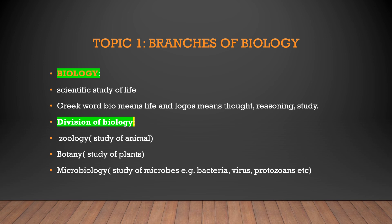Next, what are the divisions of biology? Biology includes three major categories: Zoology, which is the study of animals; Botany, which is the study of plants; and Microbiology, which is the study of microbes — organisms that cannot be seen with the naked eye and must be viewed under a microscope or electron microscope. Examples include bacteria, viruses, and protozoans.